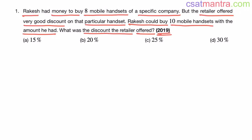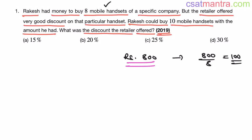For simplicity, let's say I have 800 rupees and I went to the mobile shop to buy 8 mobile handsets. What is the price of each mobile handset? 800 divided by 8 equals 100 rupees. So I have 800 rupees and each mobile handset costs 100 rupees, meaning I can buy 8 handsets with this amount.